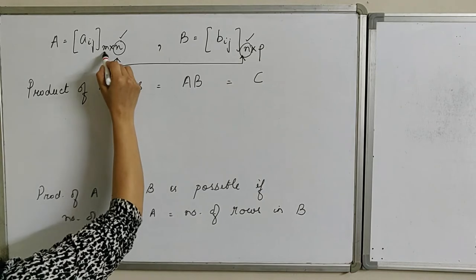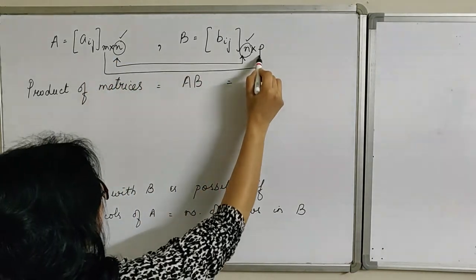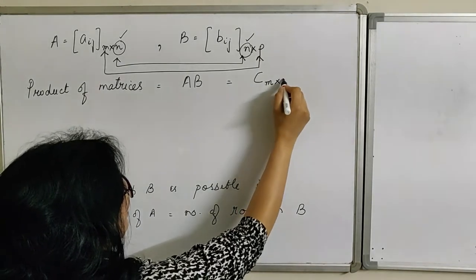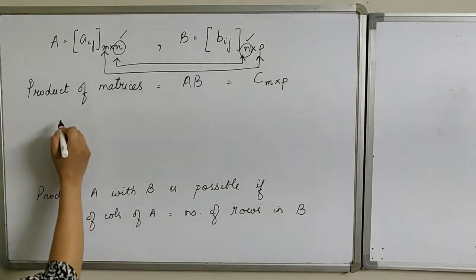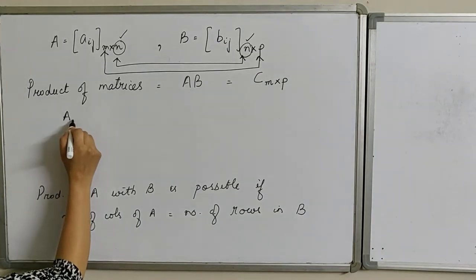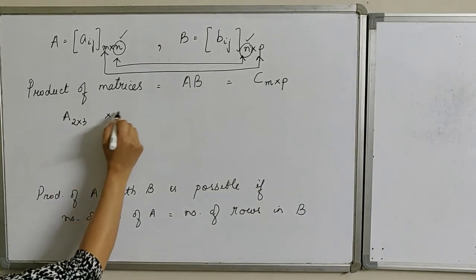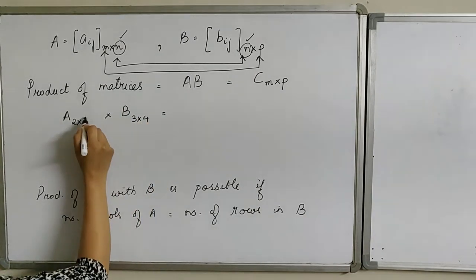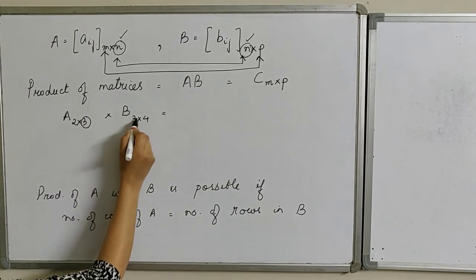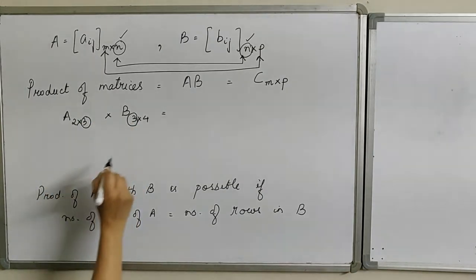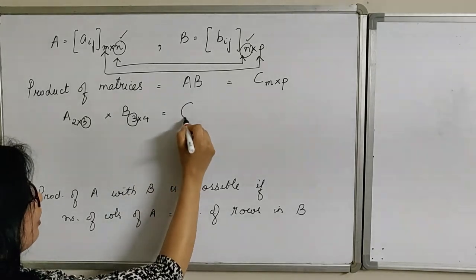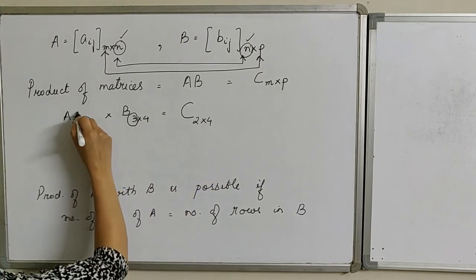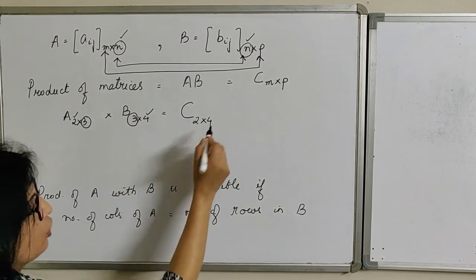On multiplying, we obtain a matrix C, and the order of matrix C is m by P — meaning matrix C will have m rows and P columns. For example, matrix A of order 2 by 3 multiplied by matrix B of order 3 by 4: since the number of columns of A equals the number of rows of B, the product is possible and gives matrix C of order 2 by 4.